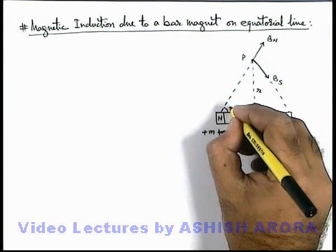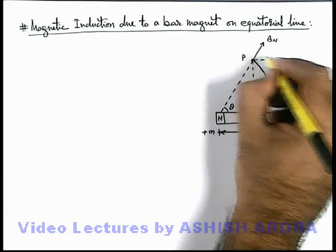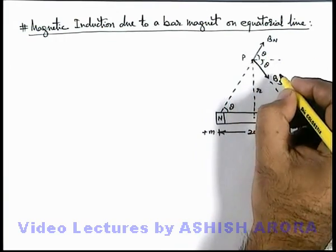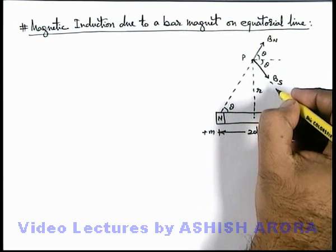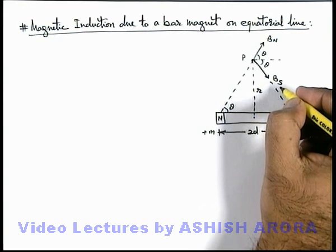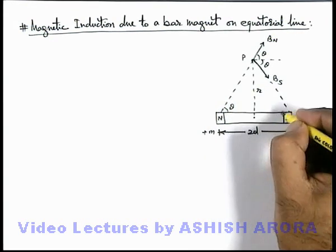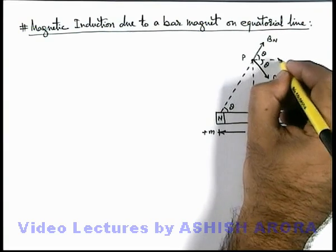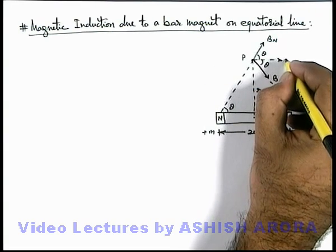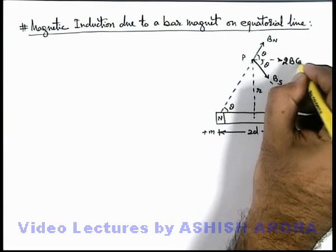In this situation if we consider this angle to be theta from horizontal, the two are also at angle theta. The magnitude of both magnetic inductions will be equal as the pole strengths are same and the distances are also same. So net magnetic field at point P we can write as 2B cos theta.